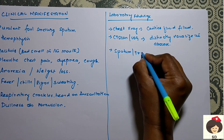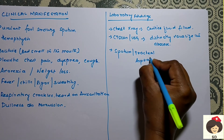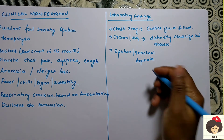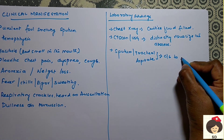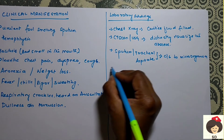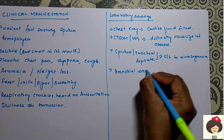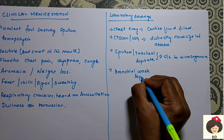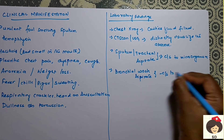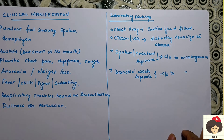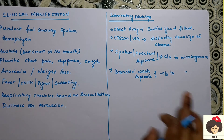Sputum and tracheal aspirate are also collected. Most patients have breathing difficulty and may be put on an endotracheal tube, and sputum or tracheal aspirate is sent for culture and sensitivity to identify the growing microorganisms, so that treatment can be given accordingly. If the infection is deep inside the lungs, a bronchial wash aspirate is also taken. Using bronchoscopy, fluid or secretion is aspirated from the bronchial area to identify if it is a tumor, secretion, or which microorganism is growing.